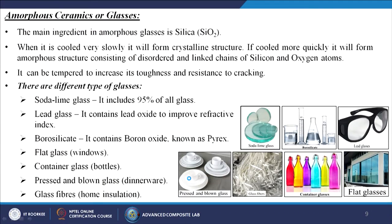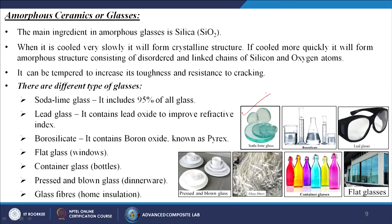There are different types of glasses. Soda lime glass includes 95% of all glass. Lead glass contains lead oxide to improve the refractive index. Borosilicate glass contains boron oxide — known as Pyrex — and is used for chemical labware such as petri dishes, pipettes, and burettes. Flat glasses are used for windows, container glasses for bottles, pressed and blown glasses for dinnerware, and glass fibres for home insulation and high-temperature resistance.